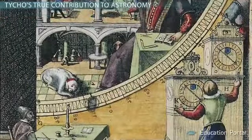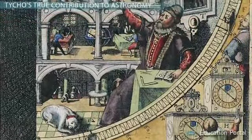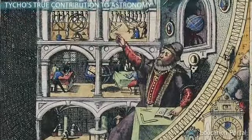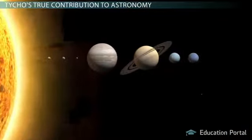Tycho's true contribution to astronomy was mainly observational in nature. He devised newer and better instruments that allowed himself and others to make very accurate observations of the Moon, planets, Sun, and stars.